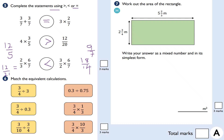Next: match the equivalent calculations. Dividing by 3 is the same as multiplying by a third — so that matches there. A little trick: 3 tenths as a decimal is 0.3, and 3 quarters as a decimal is 0.75. So the last one is dividing by 0.3, which is the same as dividing by 3 tenths, which is the same as multiplying by 10 thirds.